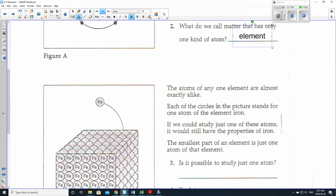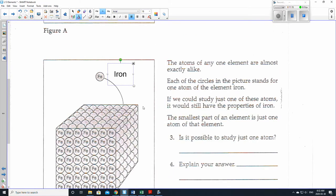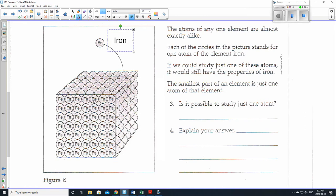So what do we call matter that has only one kind of atom? We call it an element. So we'll do this part together. So here we have Fe. And if you remember from the front page that iron skillet, that iron pan, Fe stands for iron. So if I were to take a chunk of iron, every single atom in that iron pan would be made of iron. The atoms of any one element are almost exactly alike. Each of the circles in the picture stands for one atom of the element iron. If we could just study one of these atoms, it would still have the properties of iron. The smallest part of an element is just one atom of that element.